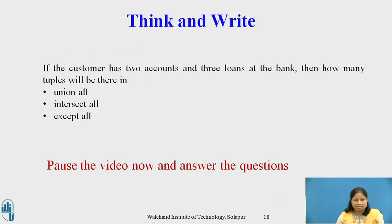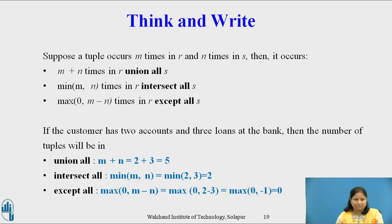Till now we have considered the various set operations. Now pause this video and reflect on this question for a minute or two and write your response. Question: If a customer has 2 accounts and 3 loans at the bank, then how many tuples will be there in the Union All, Intersect All, and Except All? I hope all of you have completed this activity. Suppose a tuple occurs m times in relation r and n times in relation s, then it occurs m plus n times in r Union All s, minimum of m and n times in r Intersect All s, and max of 0 and m minus n times in r Except All s. If the customer has 2 accounts and 3 loans, then Union All has 5 tuples, Intersect All has 2 tuples, and Except All has 0 tuples.